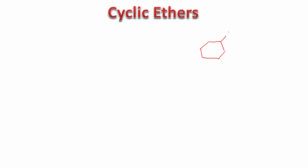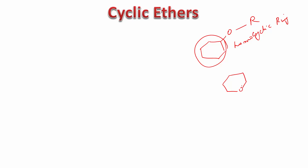Hello and welcome to this video on the IUPAC nomenclature of cyclic ethers. We're going to learn how to name cyclic ethers, and there are two types we need to talk about. The first are cyclic ethers where there is a ring system and the oxygen atom is attached outside the ring to perhaps another ring system or an alkyl group — this is a homocyclic ring. The second type is when the oxygen forms part of the ring — this is a heterocyclic ring.